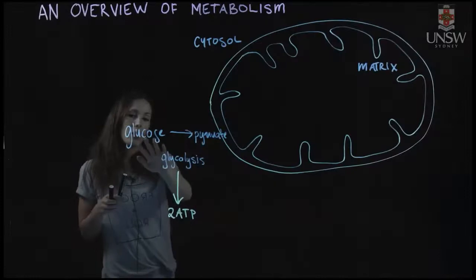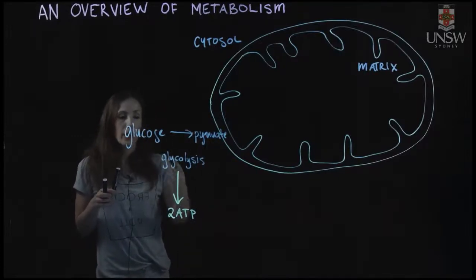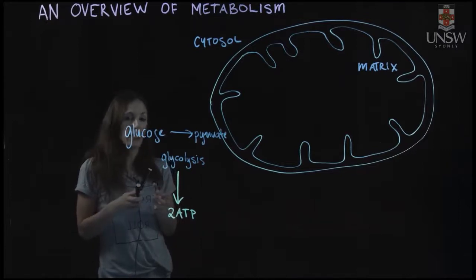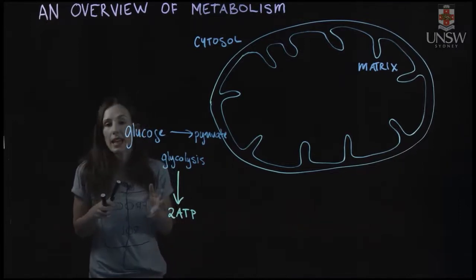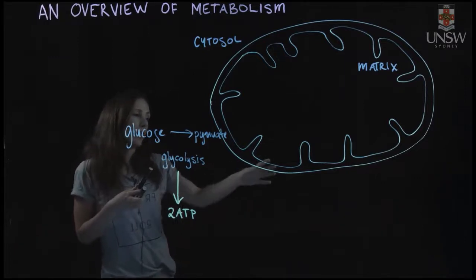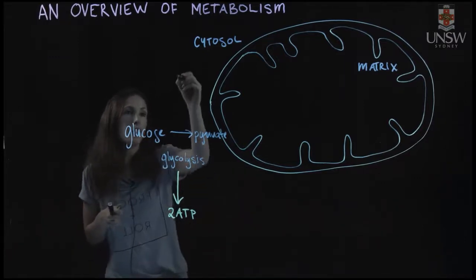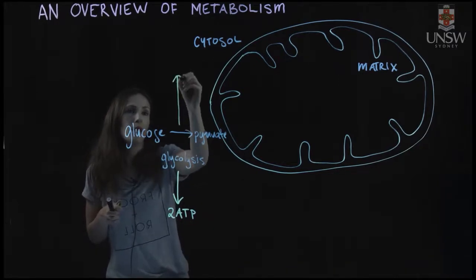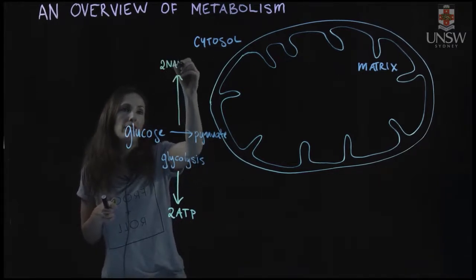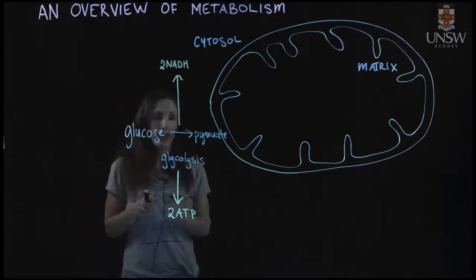When we're oxidizing glucose, the electrons are being transferred onto NAD+ to give us NADH, and it's NADH that is being used to power ultimately the production of ATP. I'll draw the two NADH that are being produced by glycolysis.